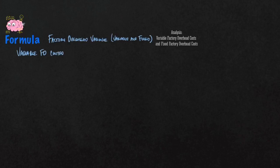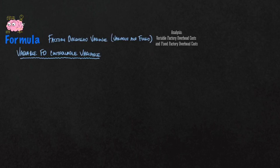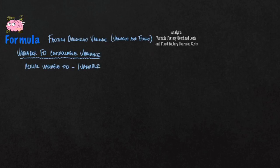The first one we'll start with is variable factory overhead controllable variance. Variable means something you can control in respect to factory overhead. The formula for that is actual variable factory overhead minus, in parentheses, the variable factory overhead rate per hour times your units produced times your standard hours per unit.